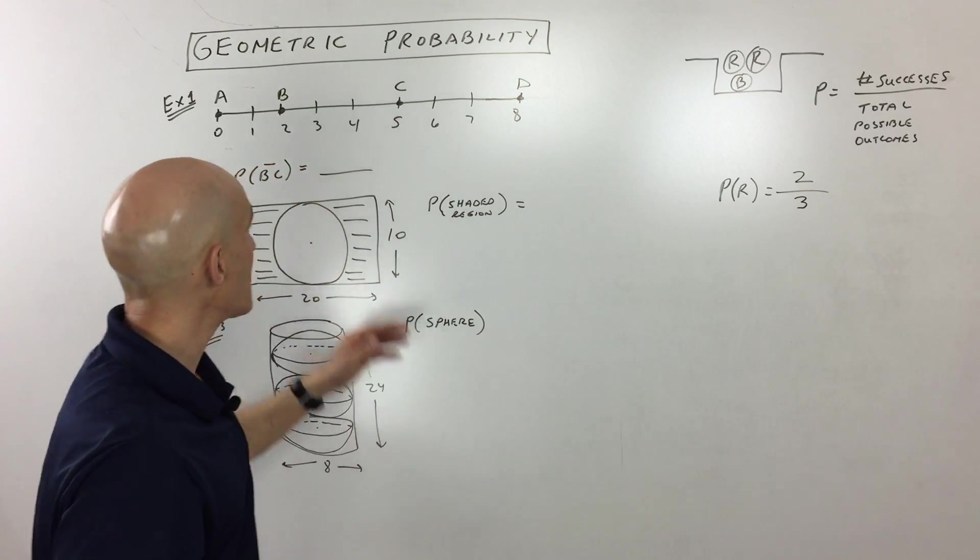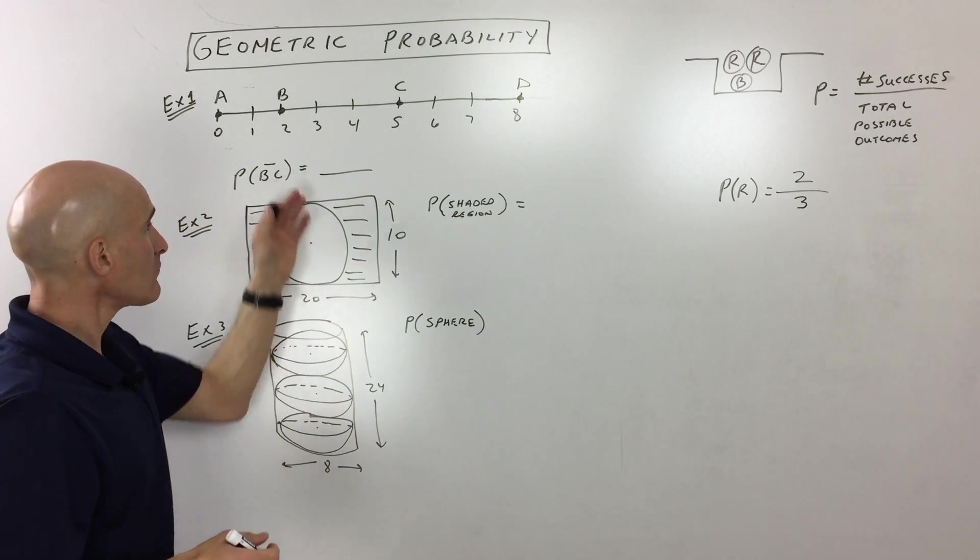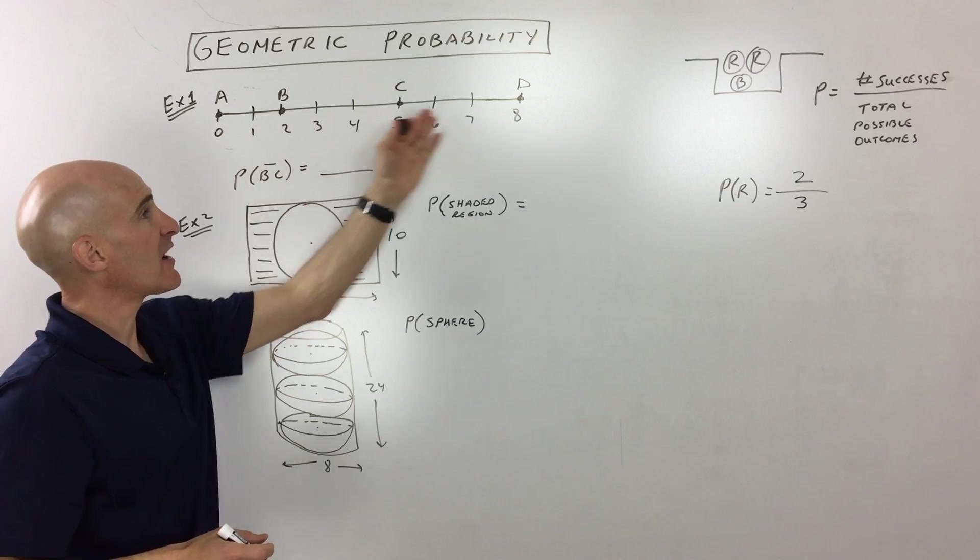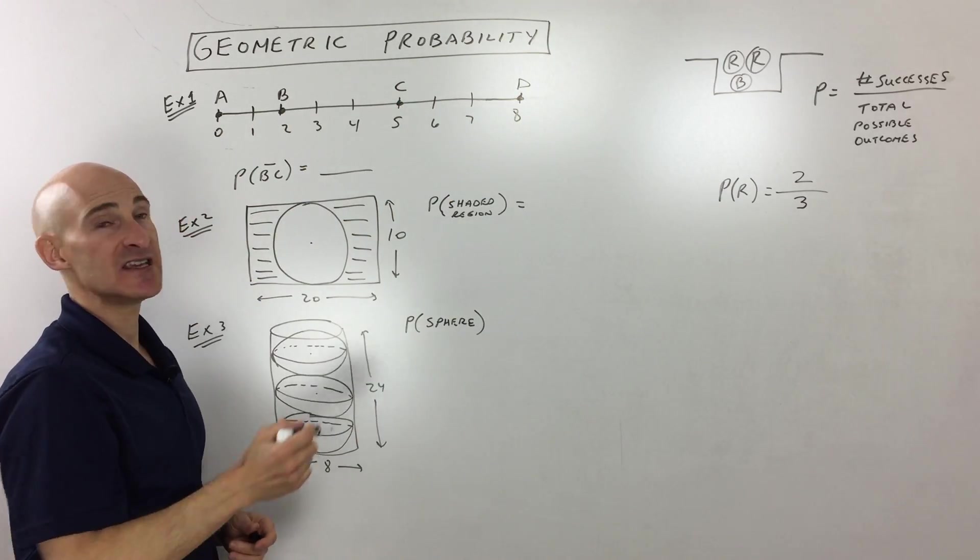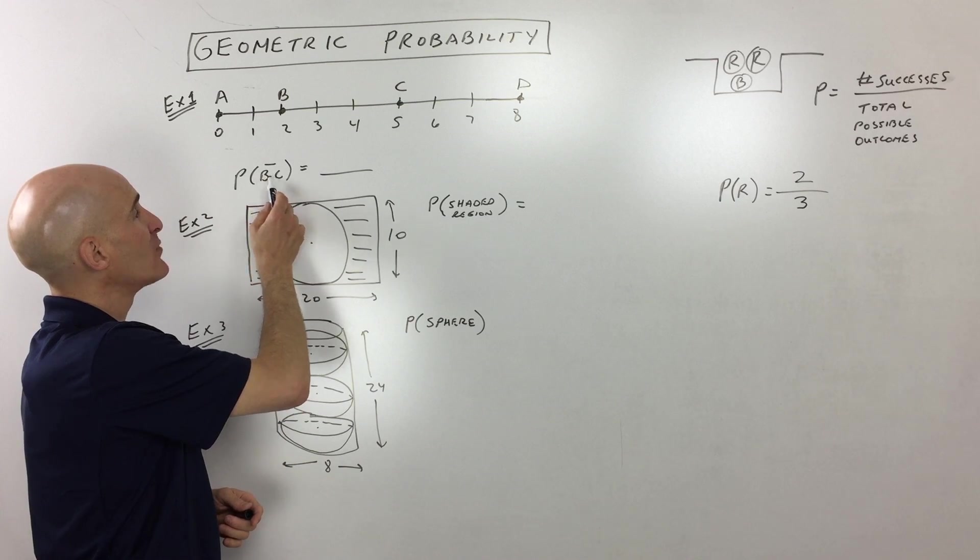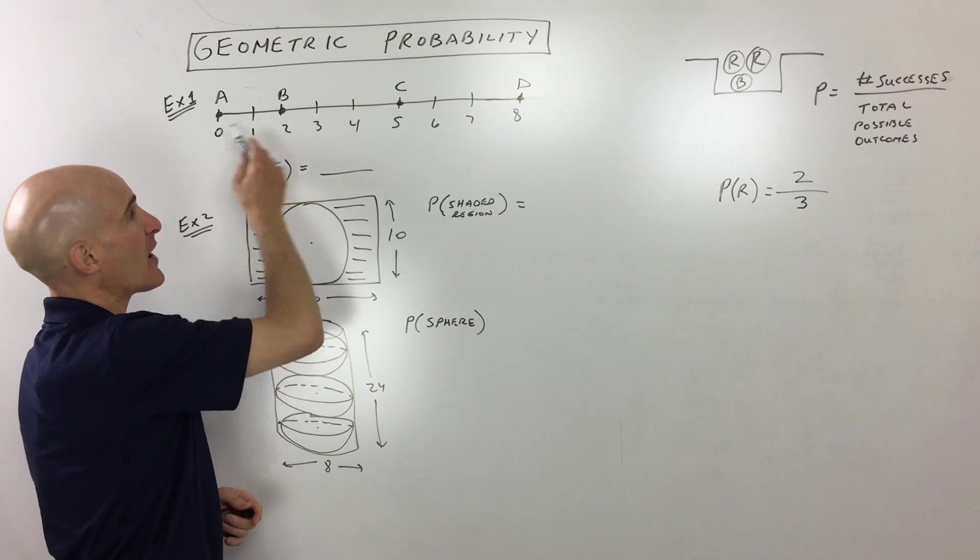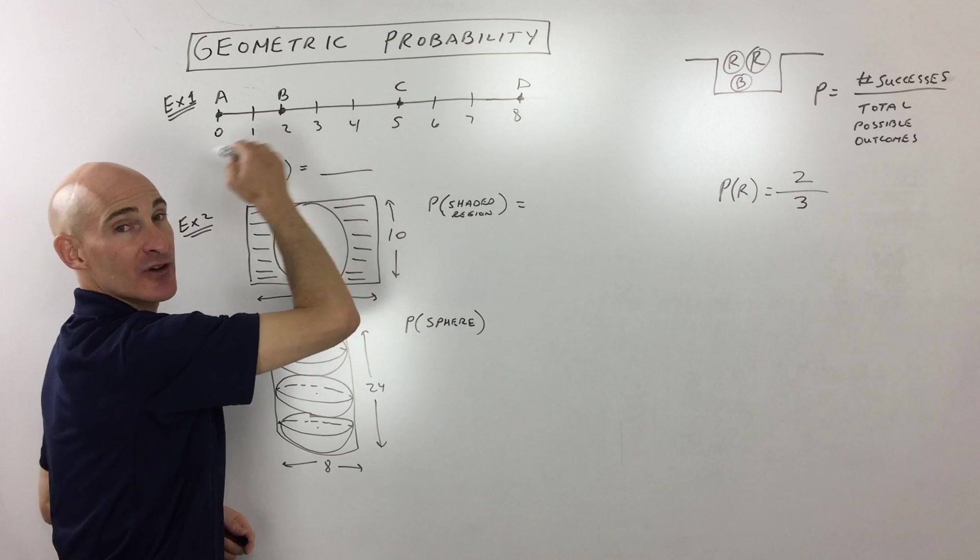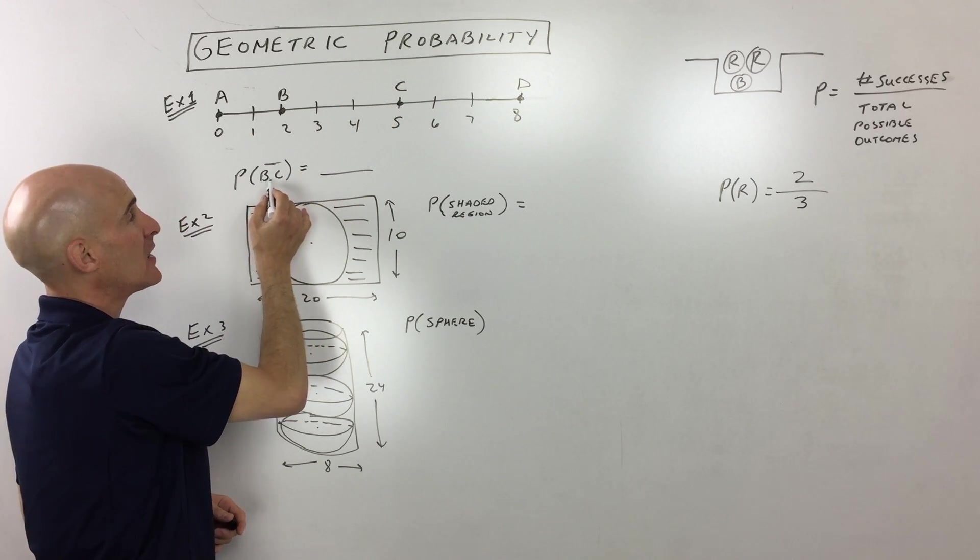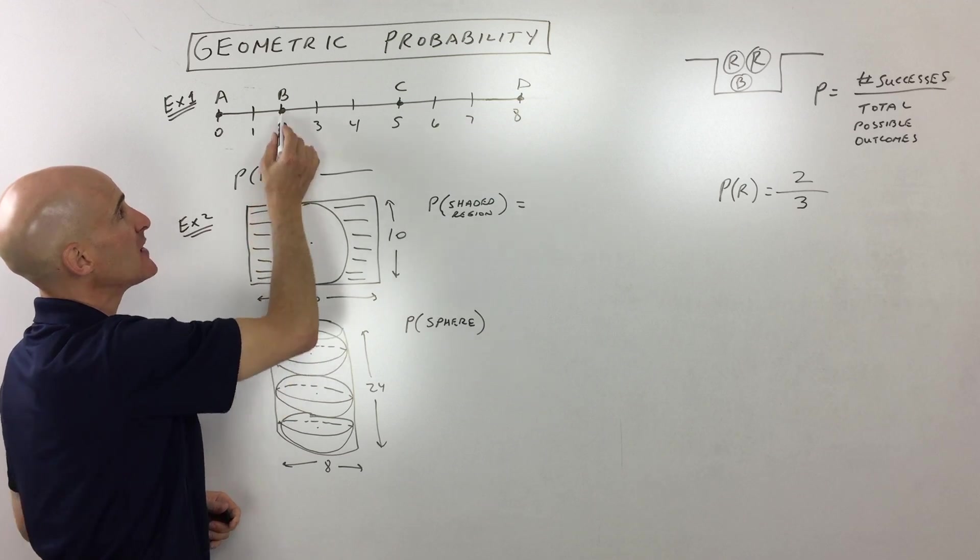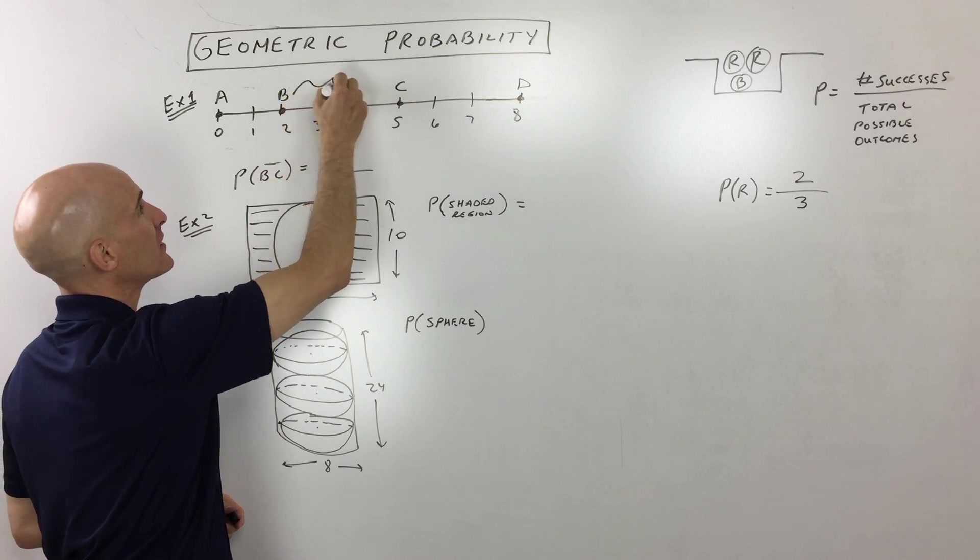So let's get into some other examples here. So the first one, you can see we've got a line segment here, and we've got some points on the line segment A, B, C, D. But it's asking us, what's the probability that if we pick a point at random on this line segment, let's say I'm blindfolded and just pick a point, what's the probability that we pick a point that lies somewhere in between B and C? So right here.